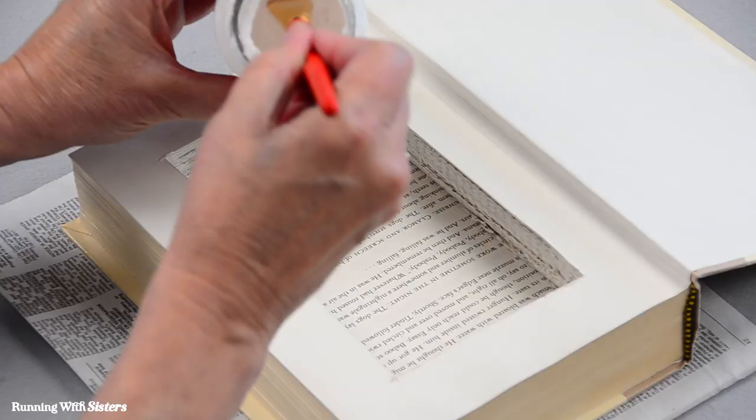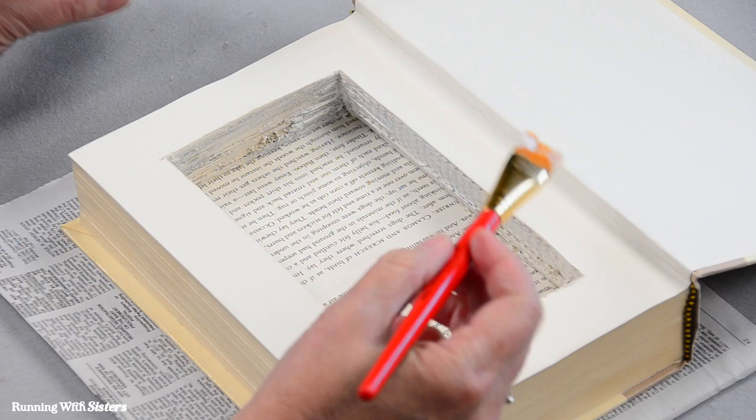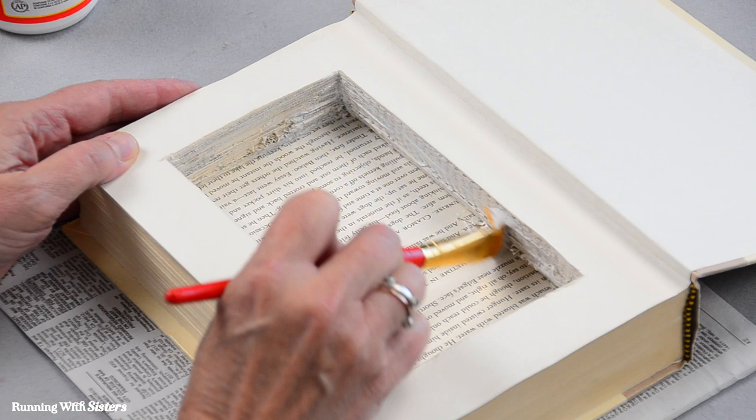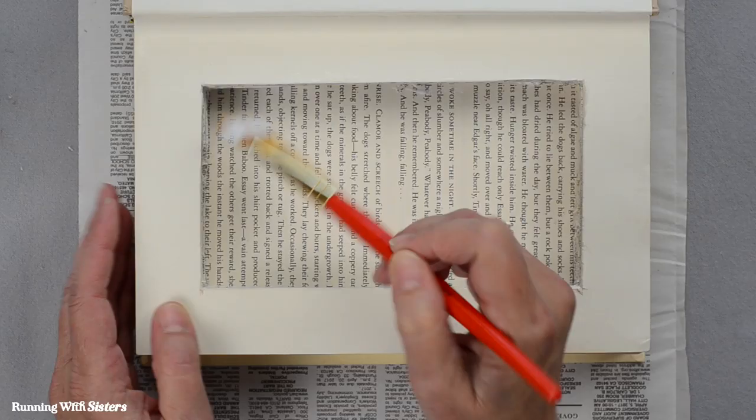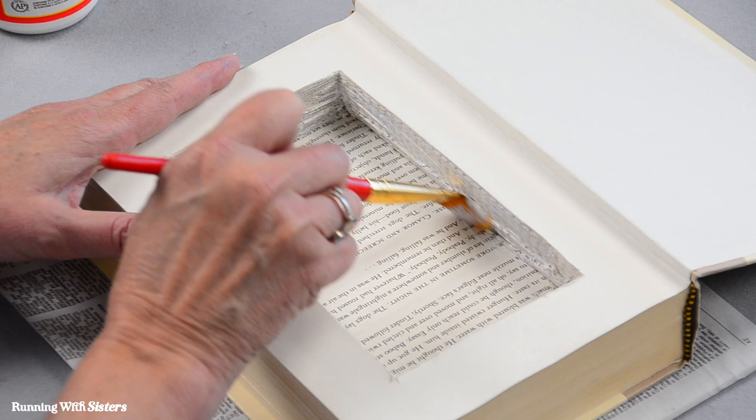And then once you have your inside of your book box sealed up and painted, let it dry. You can line the inside of this with fabric. You could use velvet if you were going to make a jewelry box. You might want to line it with velvet, and to do that you would just cut a piece of velvet that fits tucked down and you'd cut the little corner so it'll tuck down inside. That's really nice to do.